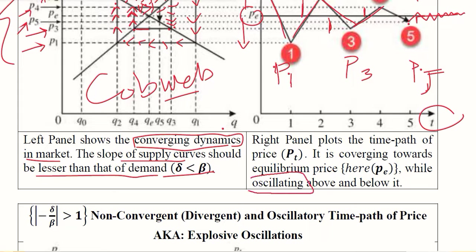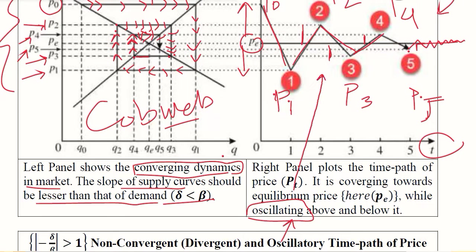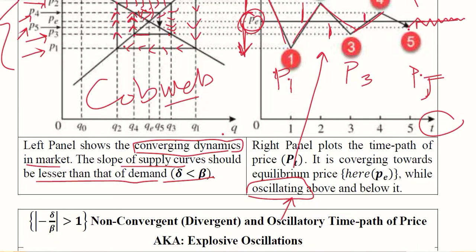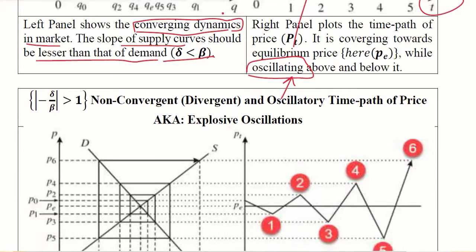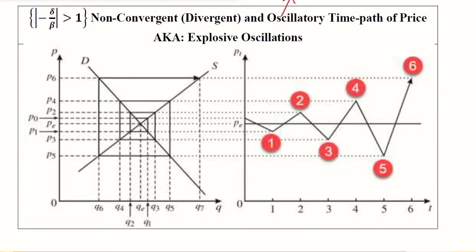One key observation is that the pattern is oscillatory — the price oscillates above and below the equilibrium price level. Now we turn to the other case: non-convergent or divergent, but still oscillatory in pattern. In this divergent case, the absolute ratio of delta to beta is greater than one, meaning the demand curve has a lower slope compared to the supply curve.